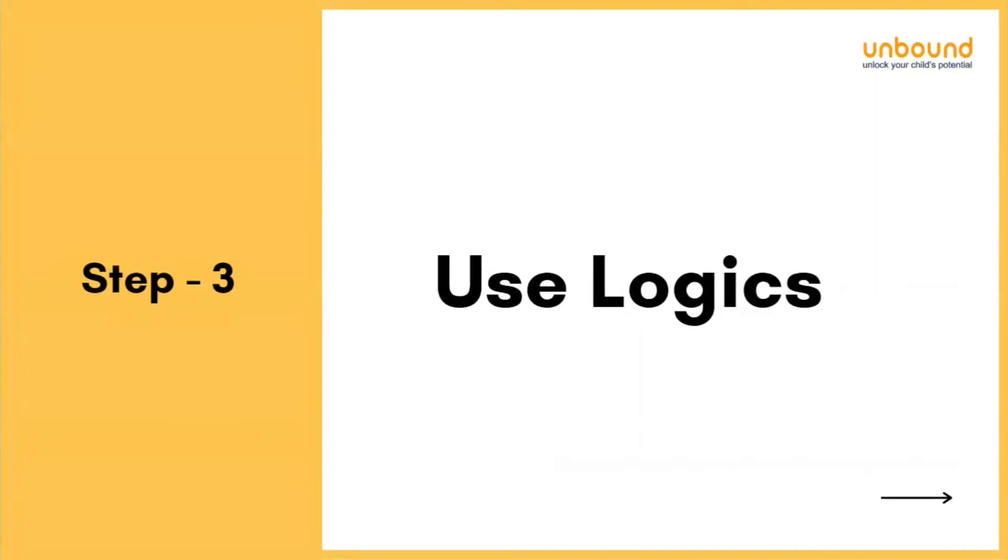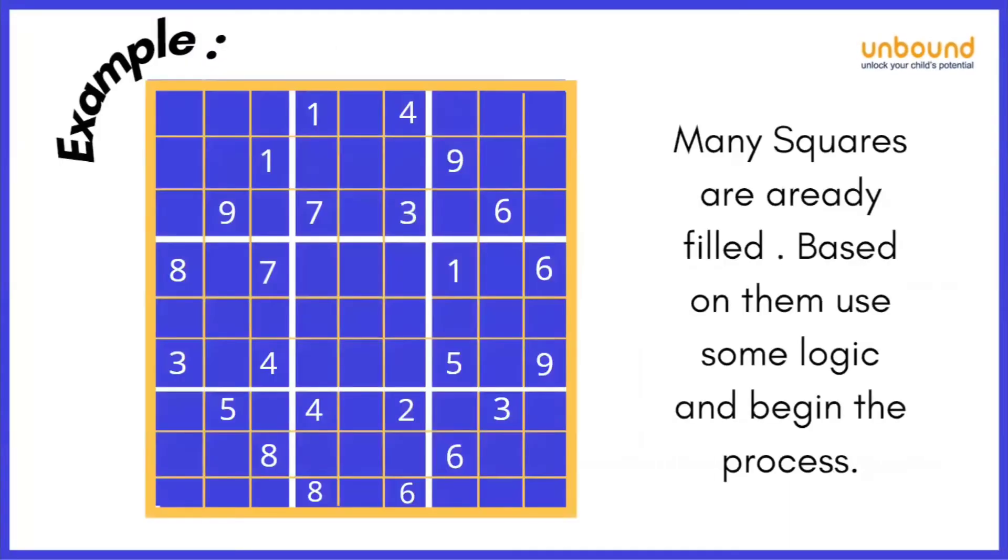Now let's see what is basically the brain, or you can say logic, behind solving a Sudoku. How people solve it so smoothly? Let's see the logic. Here, I have an example of a Sudoku. Now, you can see there is one thing: whenever a Sudoku is given to you, many squares are already filled. Based on them, we use some logic and begin to solve the Sudoku.